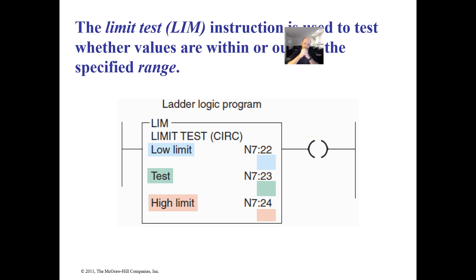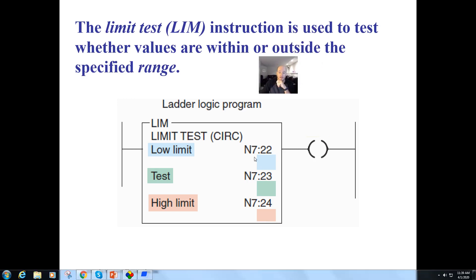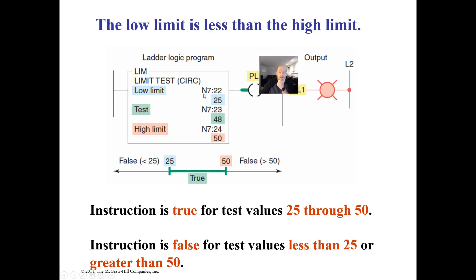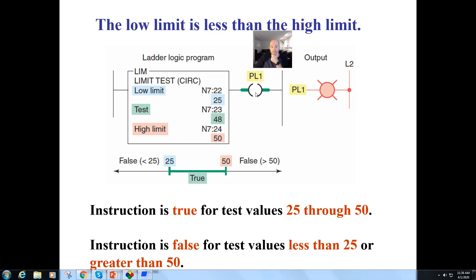Now we get to the limit test instruction. This essentially combines the less than equal to and greater than equal to. Basically it works two ways. It will set up a range, a zone, and if it's within that zone or outside of that zone it will be logically true. Let me show you. In this case I have 25 and 50, so my low limit is 25, my high limit is 50.